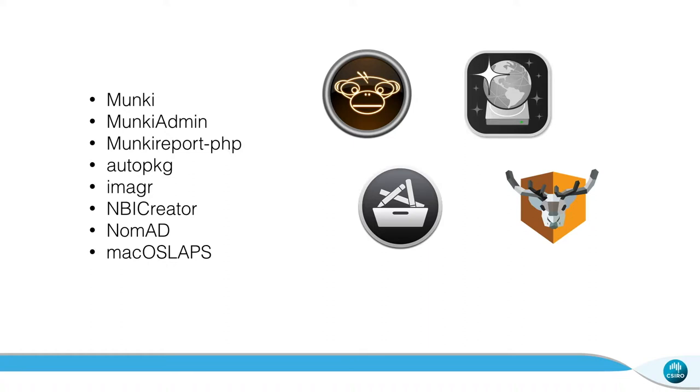Among our tools — Munki admin, report PHP — one down the bottom is Mac OS LAPS. On the Windows side you have LAPS, which is a local admin password solution — a tool for randomizing your local admin password so you don't have the same password on all machines. Mac OS LAPS is the Mac version, written by Joshua D. Miller. Originally a Python script, he recently rewrote it in Swift and released it as version 1.0.